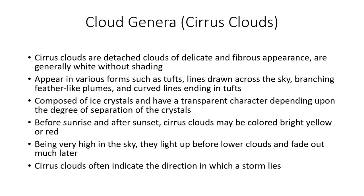Now let's break down some of these interesting clouds, starting with the cloud genera — beginning with cirrus clouds. Cirrus clouds are detached clouds of delicate and fibrous appearance, generally white without shading. They appear in various forms: tufts in the sky, lines drawn across the sky, branching feather-like plumes, and curved lines ending in tufts. These clouds are composed entirely of ice crystals and have a transparent character depending on the degree of separation of the crystals. Generally, the sun shines readily through cirrus clouds. Before sunrise and after sunset, these clouds give us magnificent colors — yellows, bright reds, and oranges — which are really amazing to see. Being very high in the sky, cirrus clouds light up before the lower clouds and fade much later.